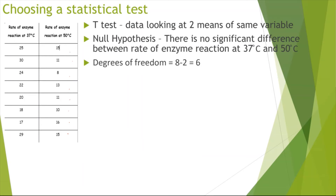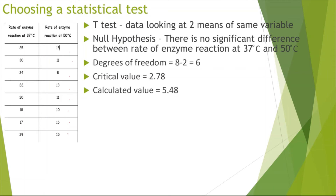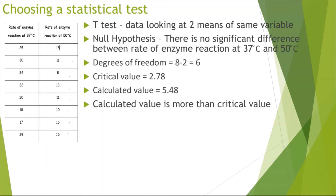To get my degrees of freedom — remember for a t-test, I do the number of categories minus 2. It will be 8 minus 2, which is 6 in this case. This will allow me to find my critical value by looking at the table, which is 2.78. The calculated value given is 5.48, so the calculated value is more than the critical value and the null hypothesis can be rejected.